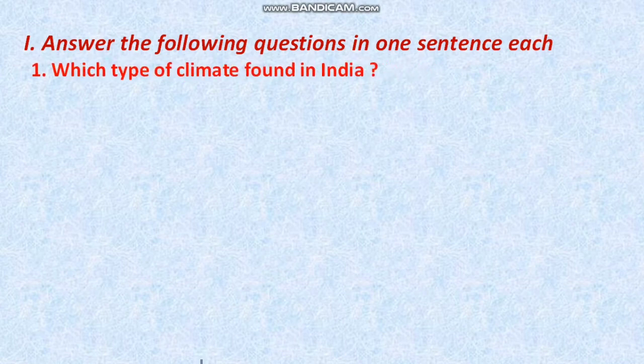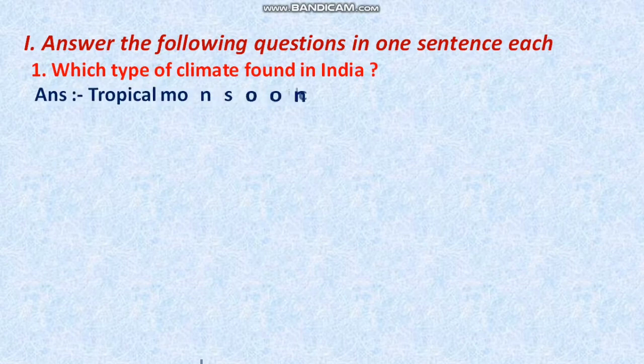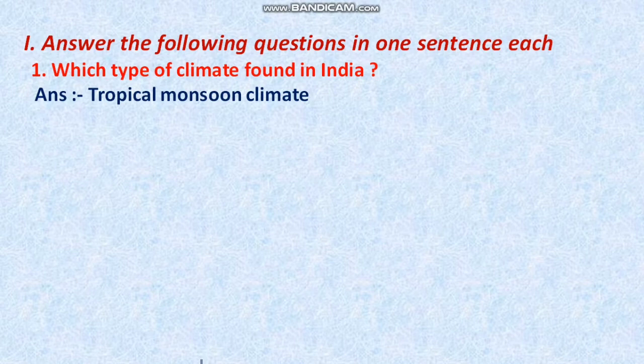Question 1: Which type of climate is found in India? The right answer for this question is Tropical Monsoon Climate. India has a Tropical Monsoon Climate.